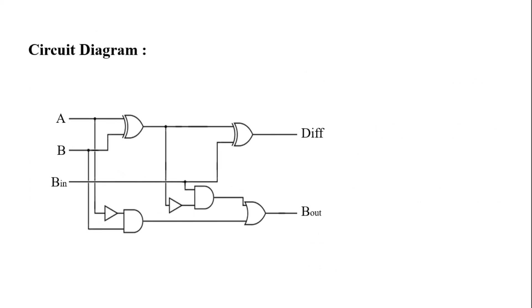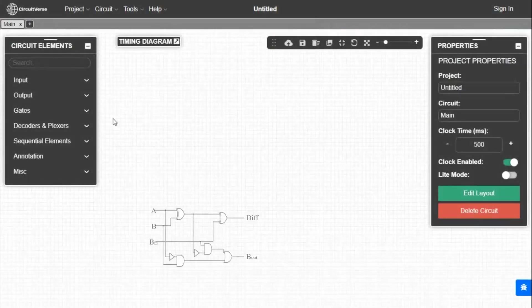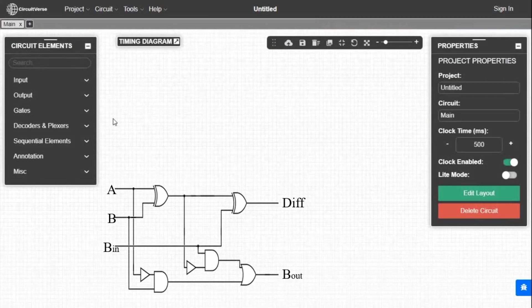Now the circuit diagram. This is the circuit diagram of full subtractor where difference = A XOR B XOR B_in and B_out = A̅·B + (A XOR B)̅·B_in. Now we will make this circuit in the simulator. For this we need two XOR gates, two NOT gates, two AND gates, and one OR gate.